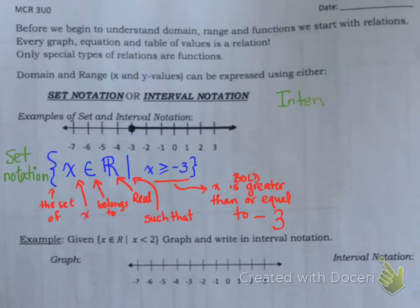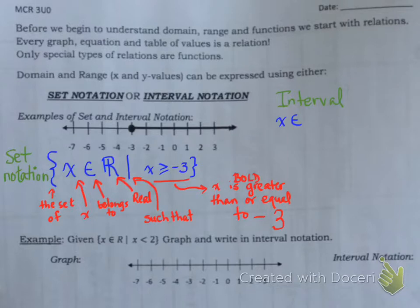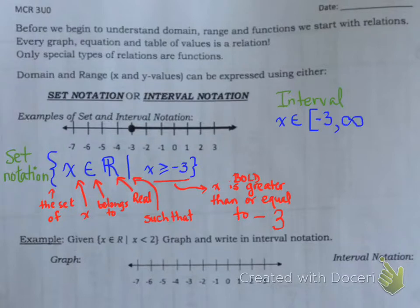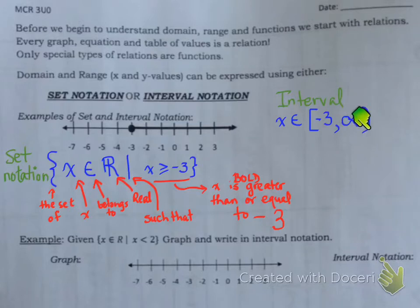So let's look at interval notation. Interval notation is as follows. X belongs to - so exactly the same way, but you don't have to have the funny curly brackets. What does it belong to? We have to say where it starts and where it finishes. It starts at negative 3. Does it start exactly at negative 3? Yes, because of the closed circle. So think of it as a hard bracket - when it's closed, it's hard. It closes from negative 3 all the way up to infinity. And anything around infinity will always have a soft round bracket.